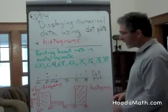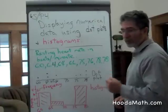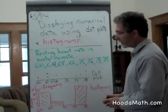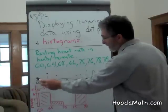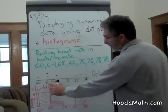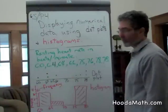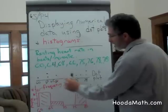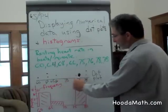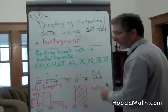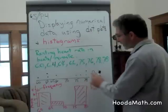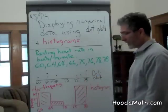A dot plot shows individual frequency of numerical data. One person has a heart rate of 60 beats per minute. Two people have 64 beats per minute. None at 65. One at 66. None in this area. One person has a heart rate of 75 beats per minute. One at 76. And two at 78.